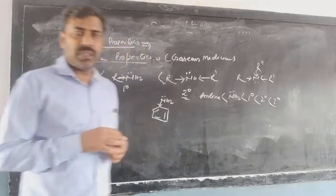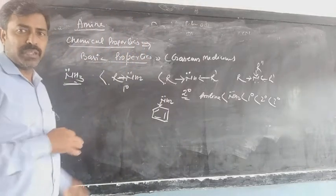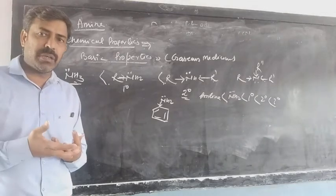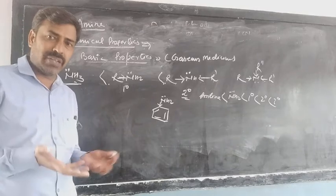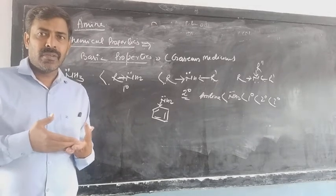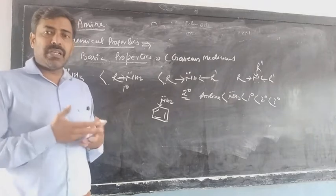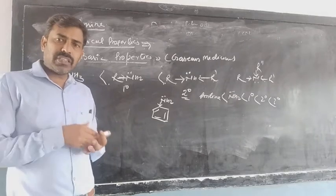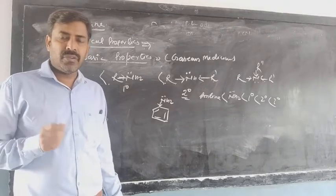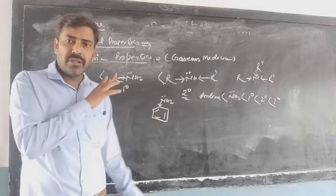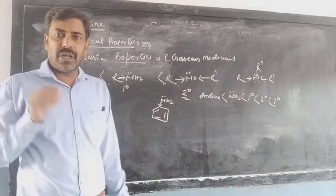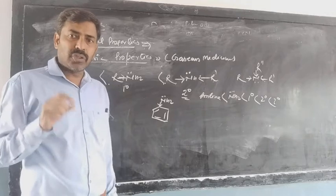Now we are going to see the basic strength in aqueous medium. What is the difference between aqueous and gaseous medium? In gaseous medium, the system behaves like a Lewis base - an electron donor. In aqueous medium, it behaves like a Bronsted-Lowry base - a proton acceptor. In gaseous medium, only inductive effects were affecting the basic strength. But now in aqueous medium, it will be the inductive effect along with the solvation effect.